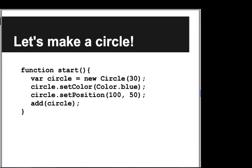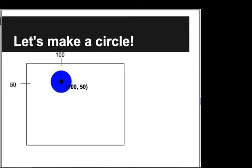Looking closely at the code: the 30 is the radius of the circle, and then we send messages telling the circle how to modify itself. When we say setPosition to 150, we're saying the center of the circle should be at position 150.